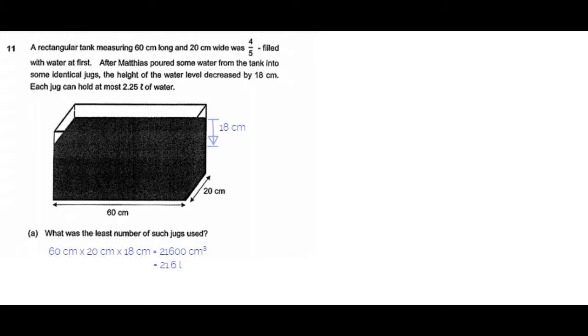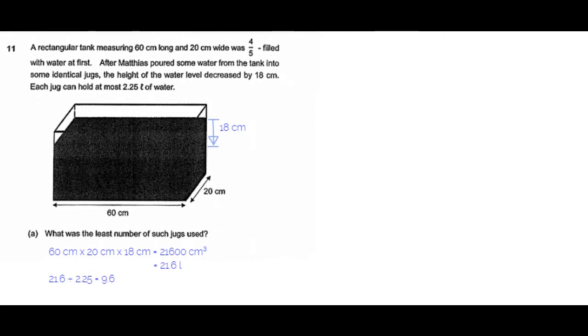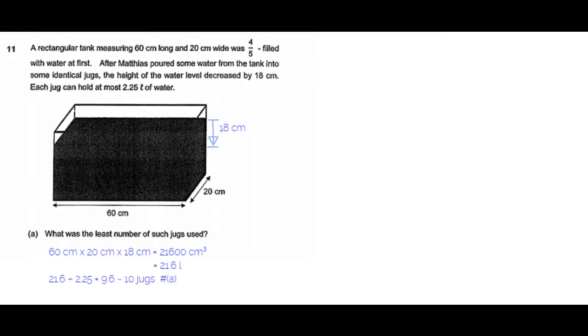Now this water is being poured into jugs of identical volume of 2.25 litres. So how many jugs would it take? 21.6 divided by 2.25, which is equal to 9.6. That is, the 10th jug would not be filled completely, but Matthias would still need 10 jugs. So that is the answer to part A of the question.